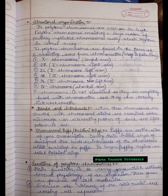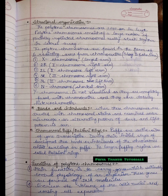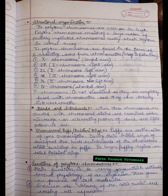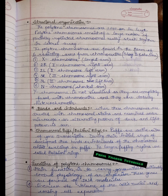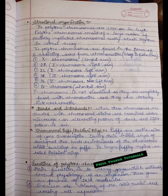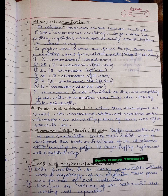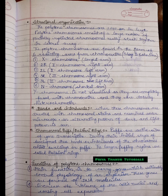Chromosomal puffs and Balbiani rings are the active sites of gene transcription. During their initial stages of development, the bands or interbands of chromosomes exhibit swelling or puffs. The larger puffing regions are called Balbiani rings. The diagram mentions the structure of polytene chromosomes, chromosomal puffs, and Balbiani rings.